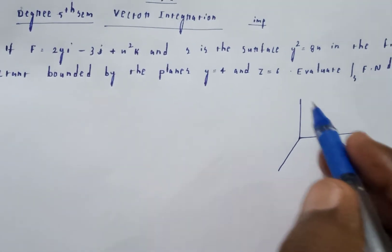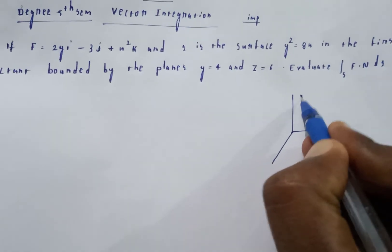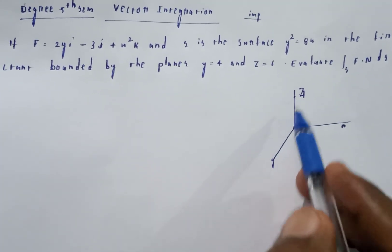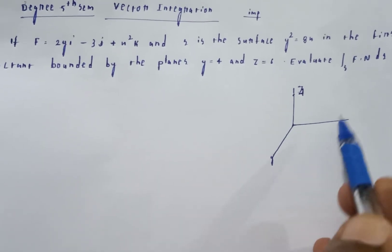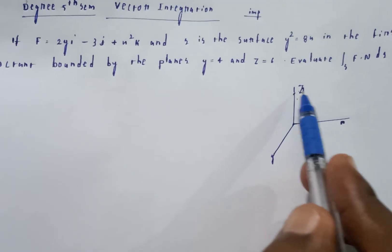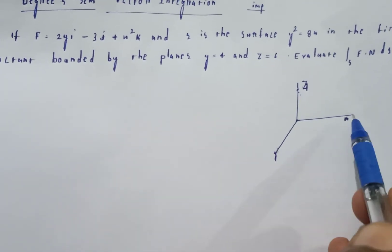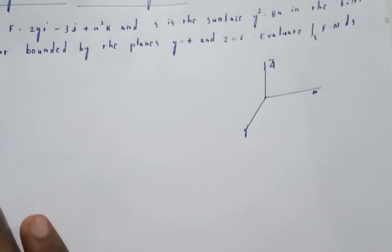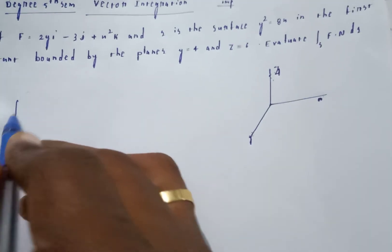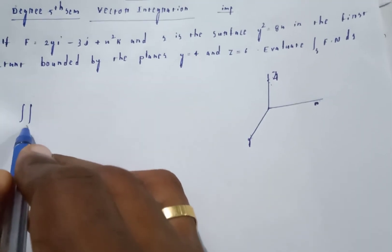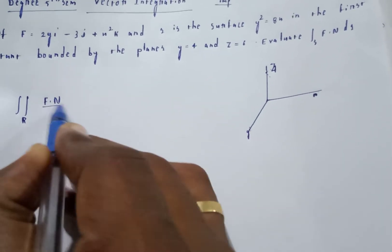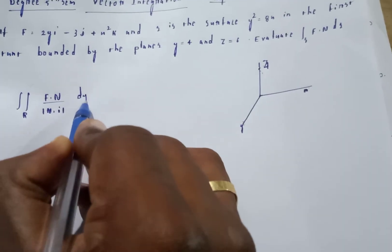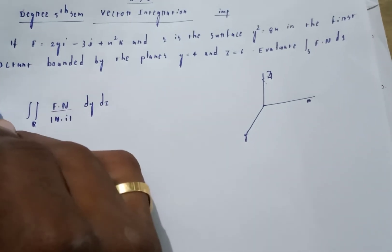The first octant means z is equal to 6. In the first octant, the yz plane — the quantity on the yz planes, with x in the first octant. First, set up our integral: double integral of f dot n, divided by n dot i, into dy into dz.